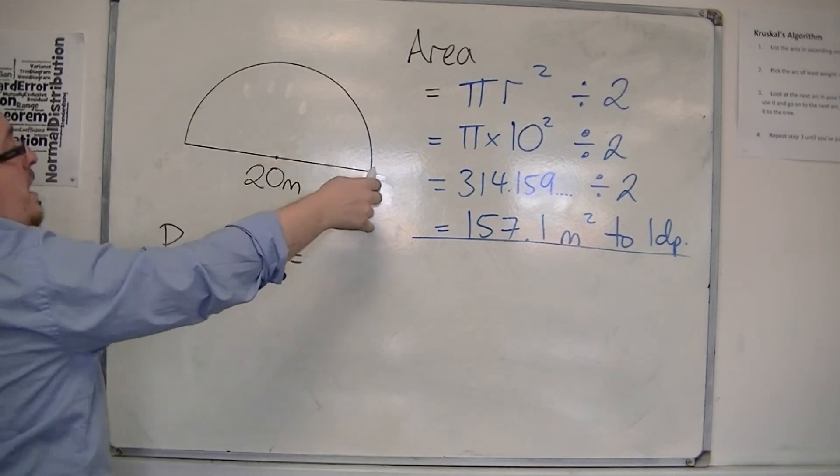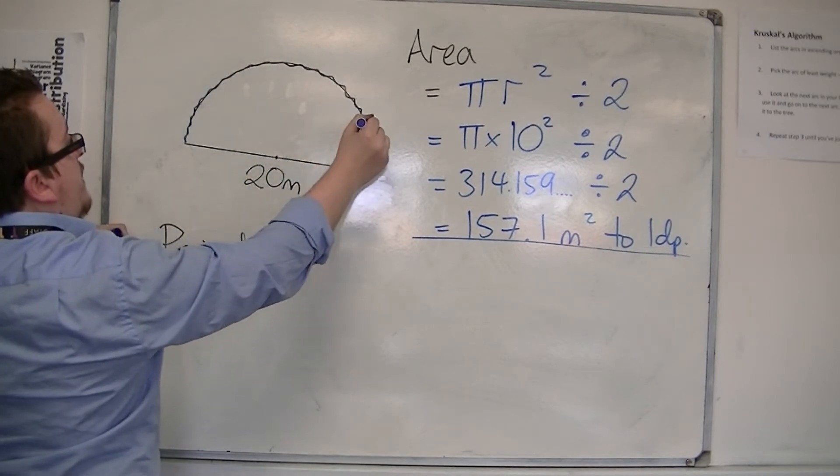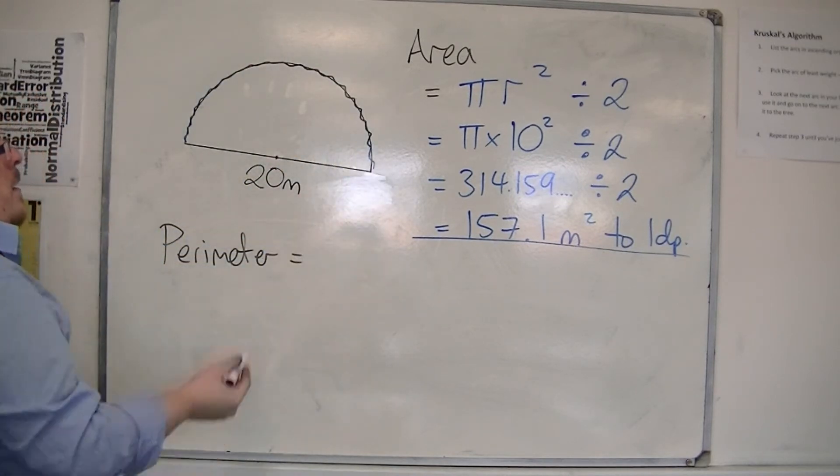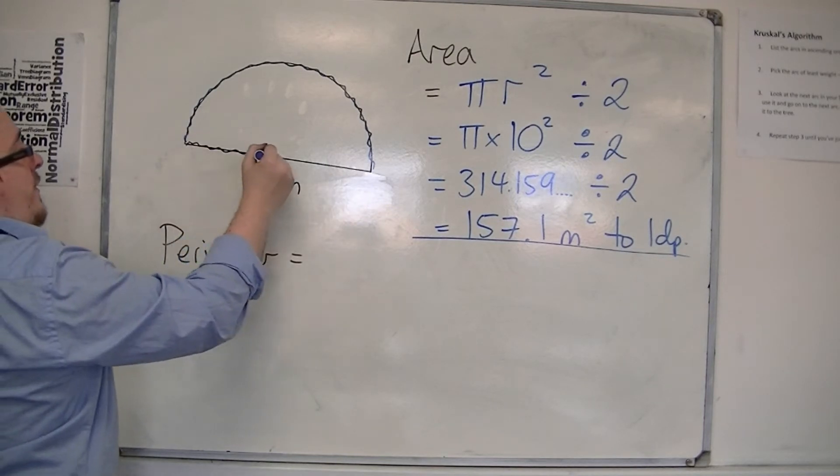But we only need half of it, and that's just going to find the bit around the outside, the curved section. I'm also going to need to add on 20 for the straight section.